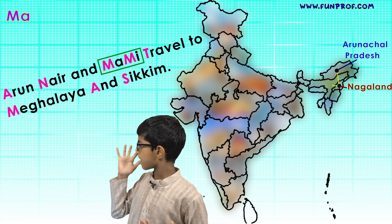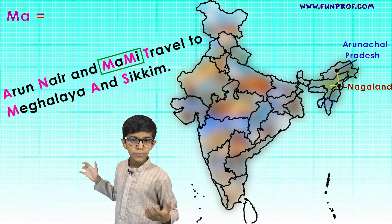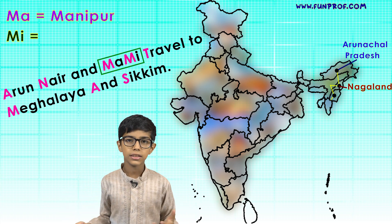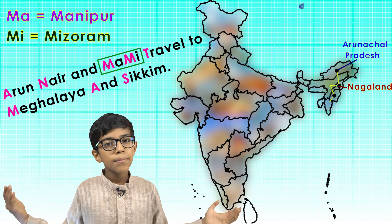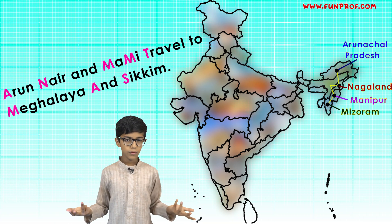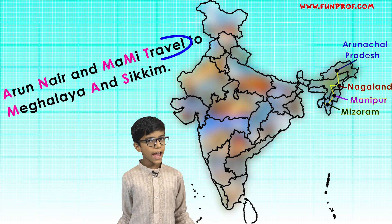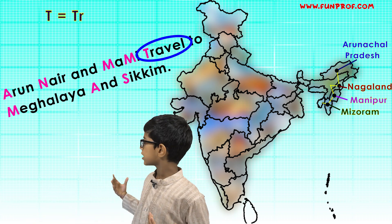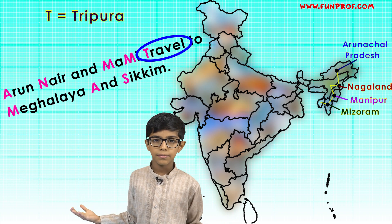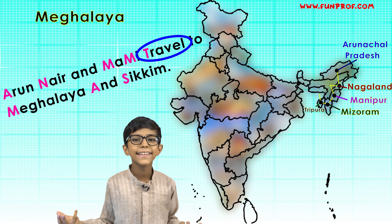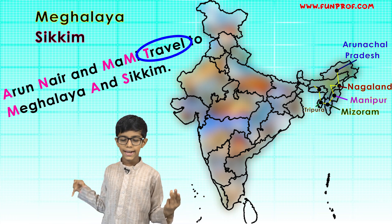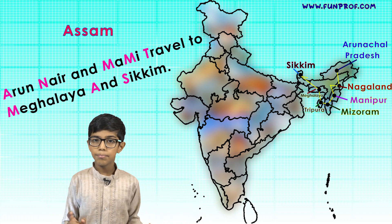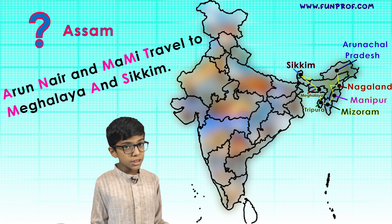In Mami, M-A stands for Manipur and M-I stands for Mizoram. Next is travel — T for travel and T for Tripura. Then Meghalaya and Sikkim complete the mnemonic.